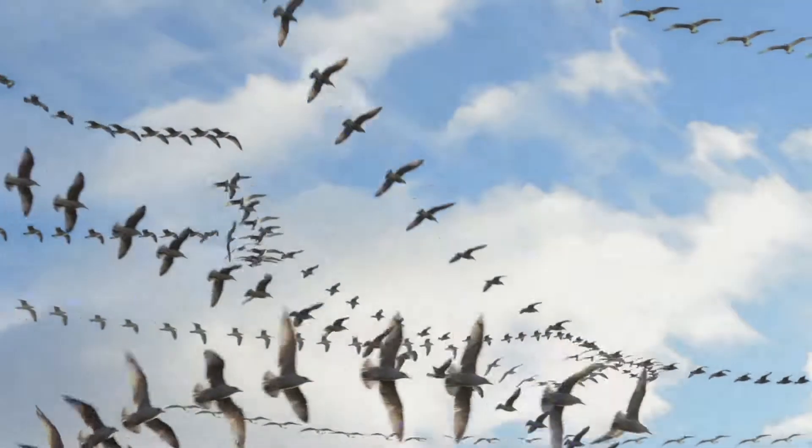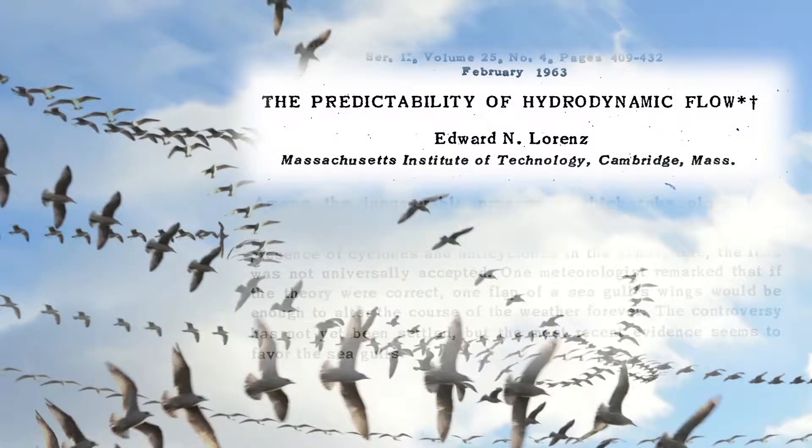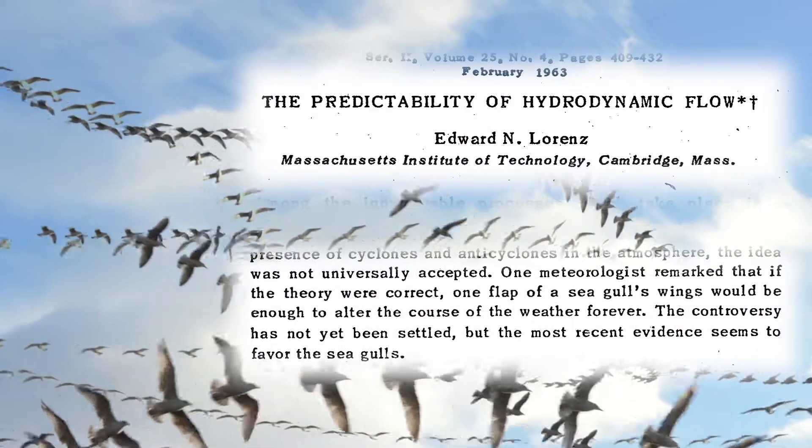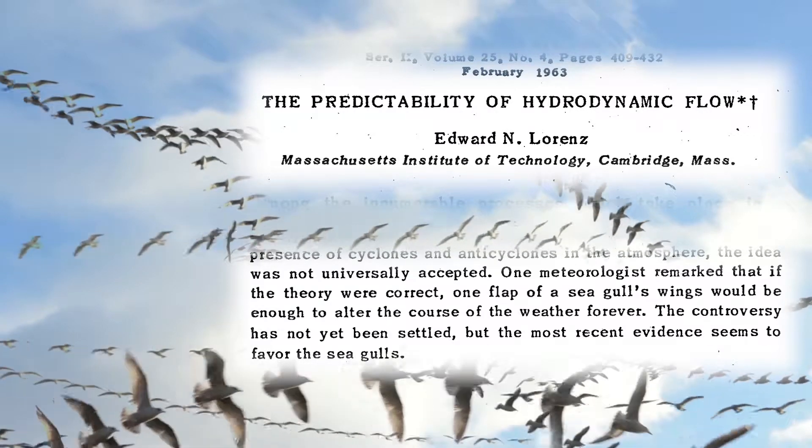When Lorenz presented this work at a conference in 1963, he ended his talk with an anecdote about a meteorologist who asked whether the flap of a seagull's wings could change the weather forever.